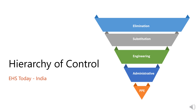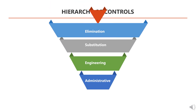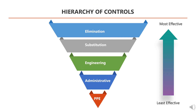Welcome to our video on the Hierarchy of Control. The Hierarchy of Control is a method for identifying and implementing the most effective ways to control hazards in the workplace. It consists of five levels, starting with the most effective methods at the top and progressing to the least effective methods at the bottom.